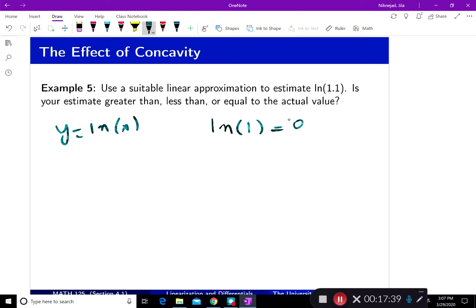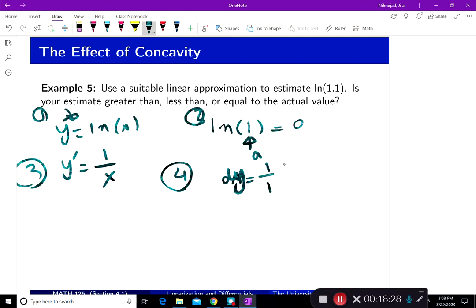And so using all of that, how do I approximate? First thing first, I want to take the derivative, 1 over x. So this is the function, that's the derivative. Plug in the a into the derivative and find dy. So dy is equal to 1 over 1 times delta x. What is delta x? Delta x is 0.1.